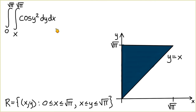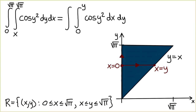Now if we want to integrate with respect to x first, we draw a line segment parallel to the x-axis passing from the left side of the region of integration to the right side. Notice that this line segment starts on the y-axis, which is the line x = 0, and goes up to the line y = x, or x = y. Therefore, if we set up a double integral integrating with respect to x first, we integrate from x = 0 to x = y on the inner integral.